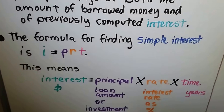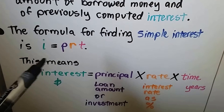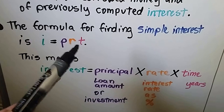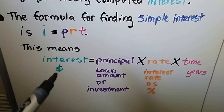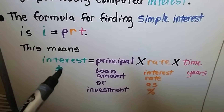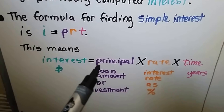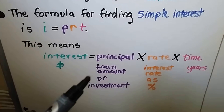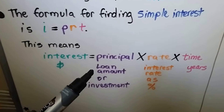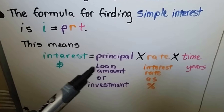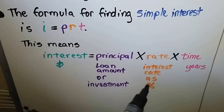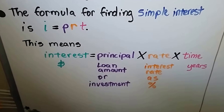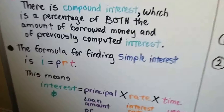The formula for finding simple interest is I equals PRT. Remember, when variables are right next to each other it means we multiply them. So this means interest — the money that you're earning or paying — is equal to the principal times the rate times the time. That means it's the loan amount or investment multiplied by the interest rate percentage multiplied by the time in years.